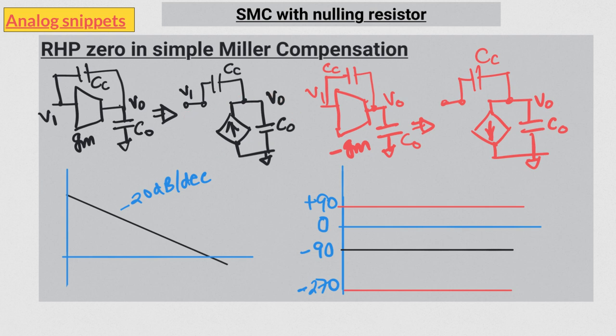But at high frequencies, the conductance of the capacitor completely swamps the gm, and this circuit basically behaves like a capacitive divider circuit. The output to input ratio becomes a constant based on the capacitor values.